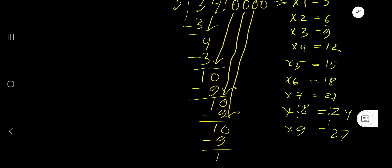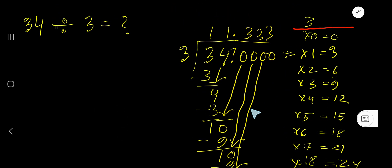You can continue this process. Since we have gotten three digits after the decimal, we can write 11.333... as our answer. Or you can place a bar over the 3 to indicate that it's repeating. So our answer is 11.3 with a bar over the 3.